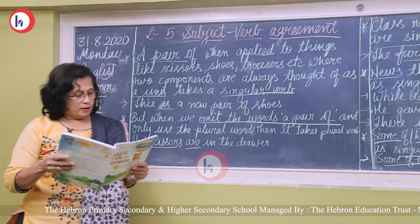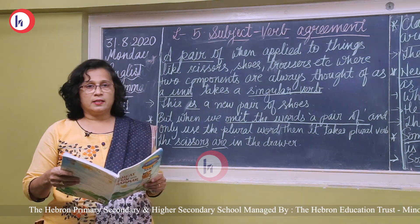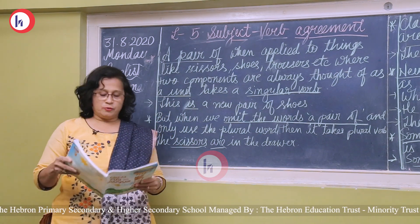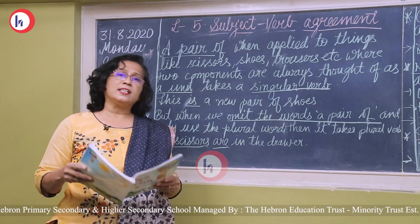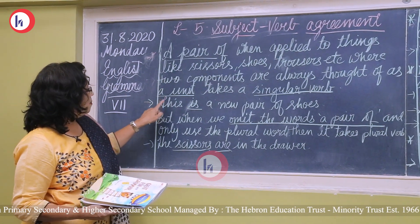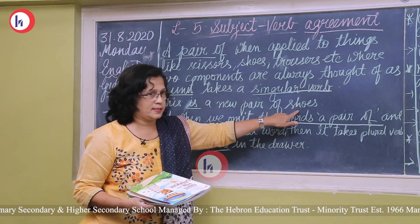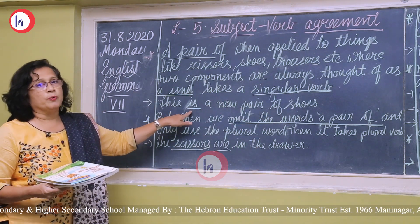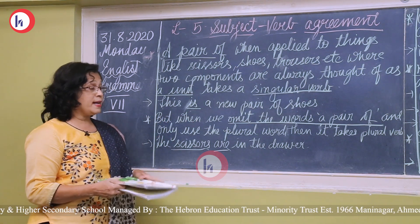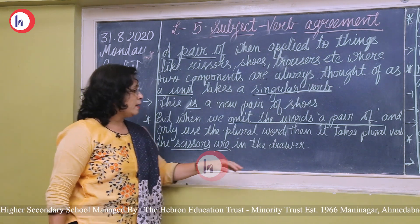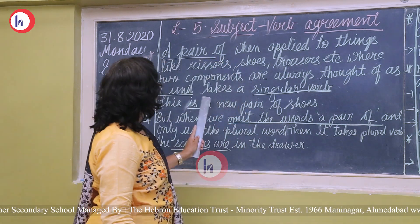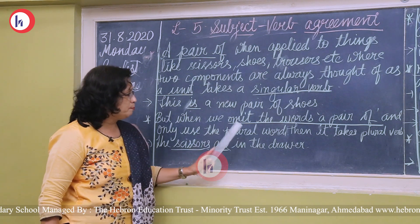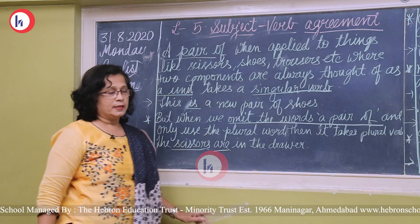When 'a pair of' is applied to things like scissors, shoes, or trousers — which have two components — it takes a singular verb because they are counted as one unit. For example, 'there is a new pair of shoes.' We use the singular verb 'is.' Remember, though: when we omit the words 'a pair of,' the rule changes.